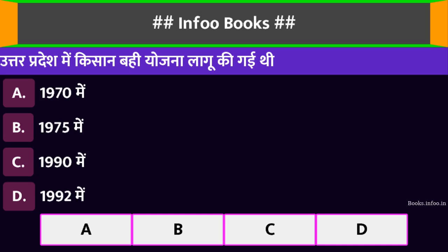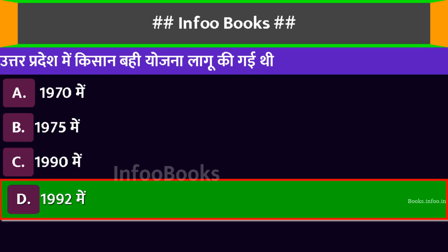उत्तर प्रदेश में किसान बही योजना लागू की गई थी। Option A: 1970 में। Option B: 1975 में। Option C: 1990 में। Option D: 1992 में। सही विकल्प है: 1992 में।